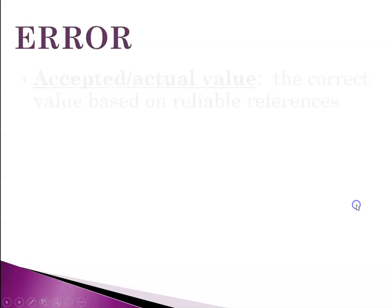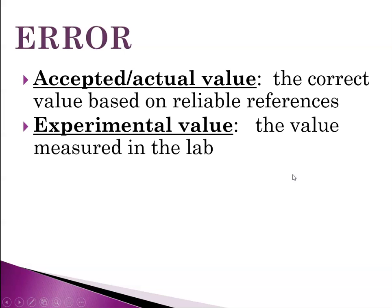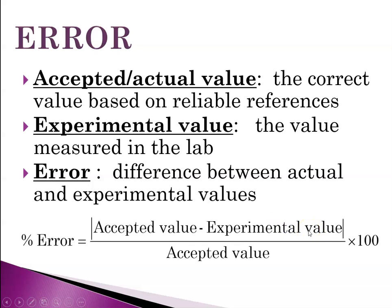That brings up error. The accepted value is the correct value based on reliable references — it's the true value. The experimental value is the value that you measure, typically in the lab. Error is the difference between the accepted value and what you measured in the lab. We'll use a formula for percent error: percent error equals the absolute value of the accepted value minus the experimental value, divided by the accepted value, times 100. We'll use this quite a lot this year as we move through our experiments.